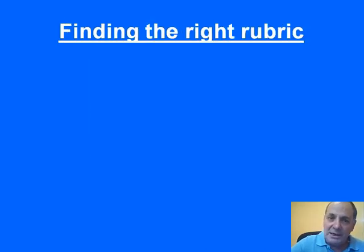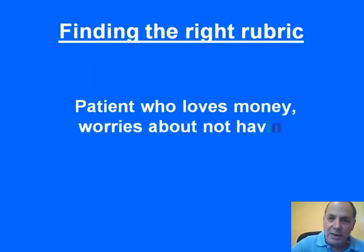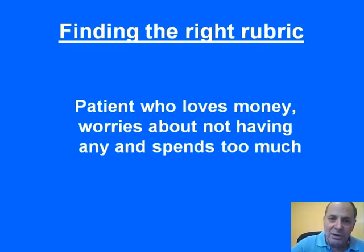Therefore, I created a meta-rubric called Carers and Helpers — a rubric that contains all the possible remedies pertaining to this idea and concept of people who are too caring. Let's take another example. Here we have a patient who loves money, worries about not having any, and spends too much — a money-oriented, materialistic patient.